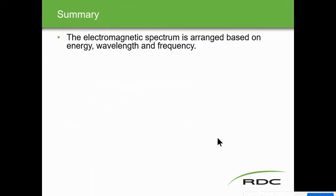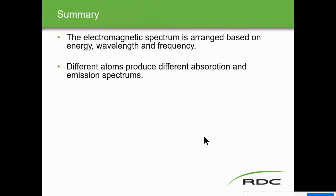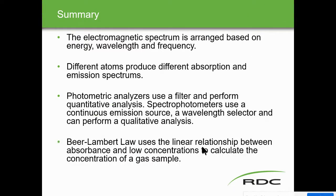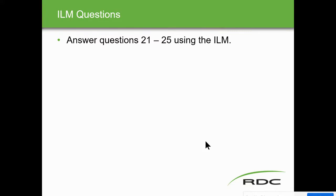Summary: the electromagnetic spectrum is arranged by energy, wavelength, and frequency — shorter wavelengths have more energy. Different atoms produce different absorption and emission spectrums. Photometric analyzers use filters for qualitative analysis; spectrophotometers use a continuous emission source with a wavelength selector. Beer-Lambert's law uses a linear relationship between absorbance and concentration at low concentrations, deviating near 100% concentration. That concludes the spectroscopic analyzers module.